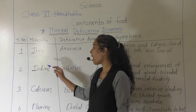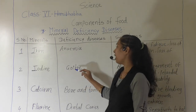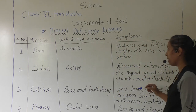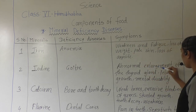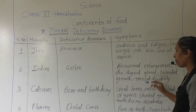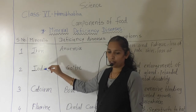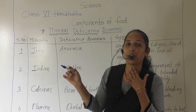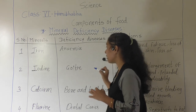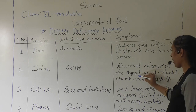Next we will discuss iodine, which is very important. The lack of iodine causes a disease, and that disease is goiter. Let's see the symptoms for goiter: abnormal enlargement of the thyroid gland, retarded growth, and mental disability. Goiter is caused due to the deficiency of the mineral iodine.